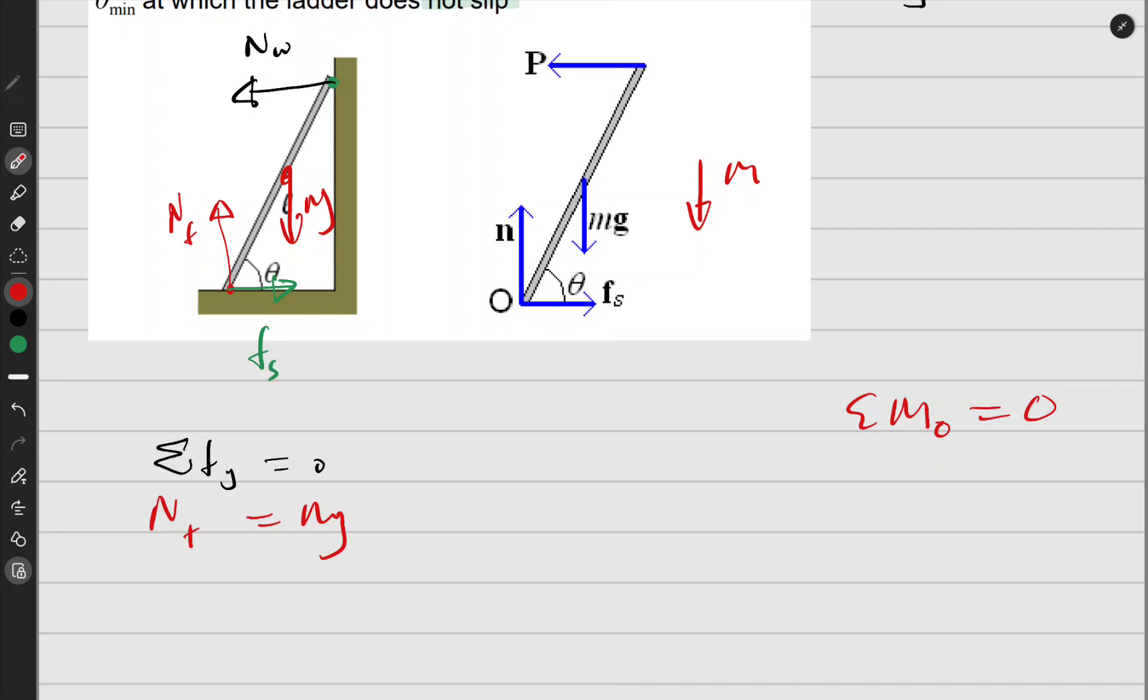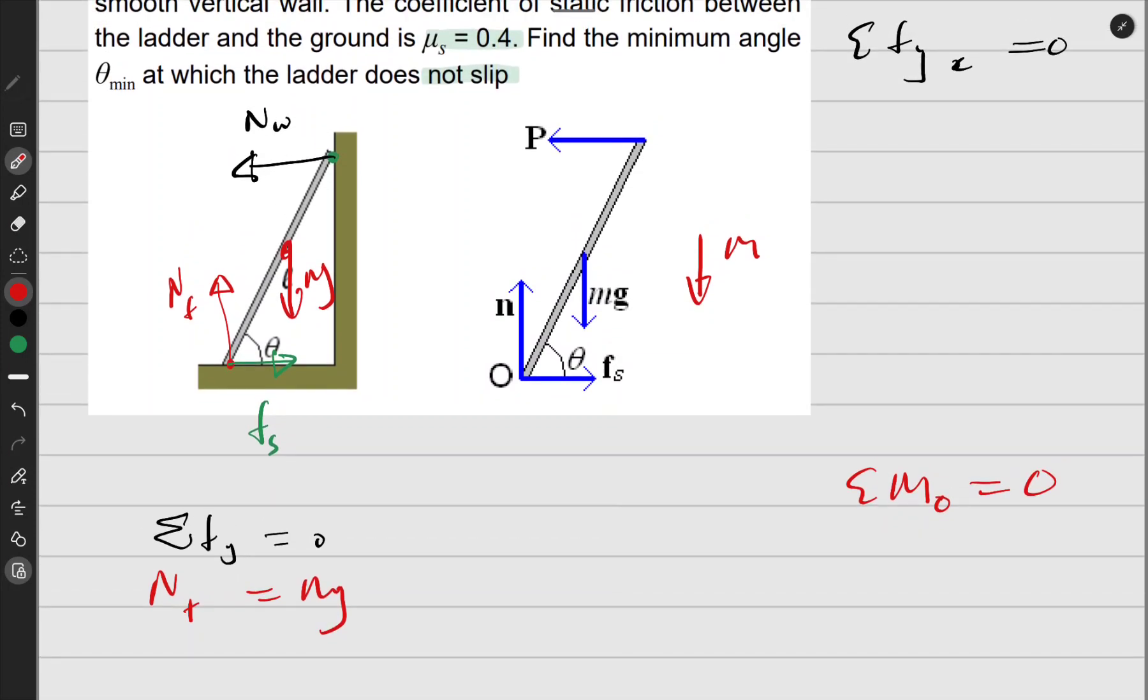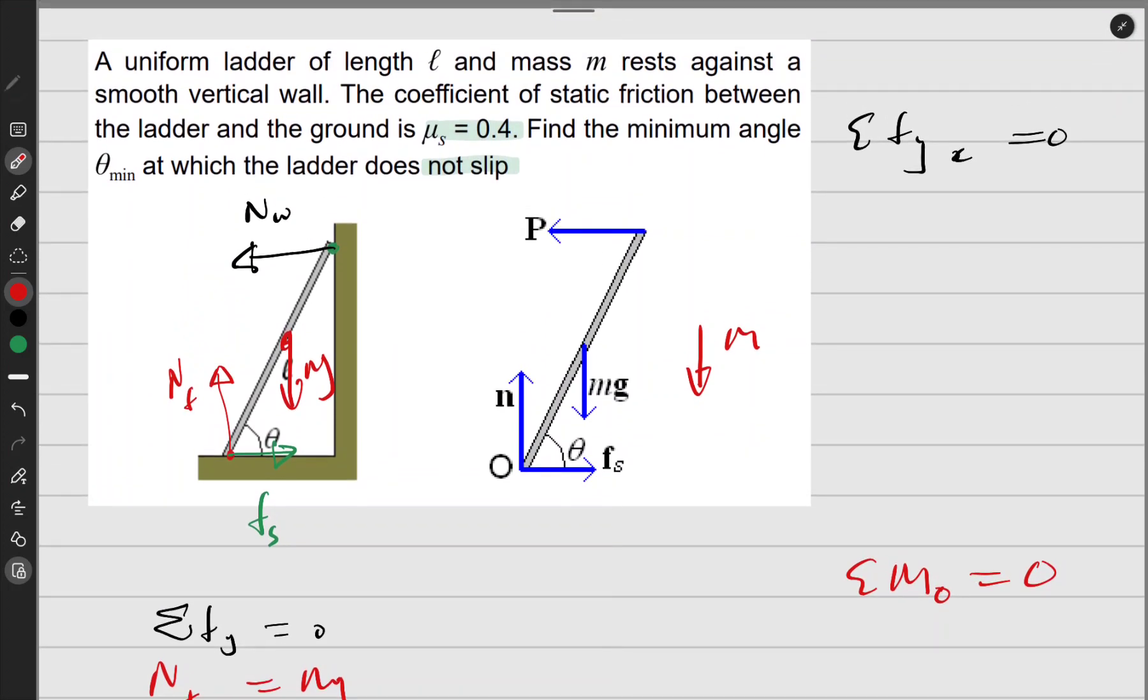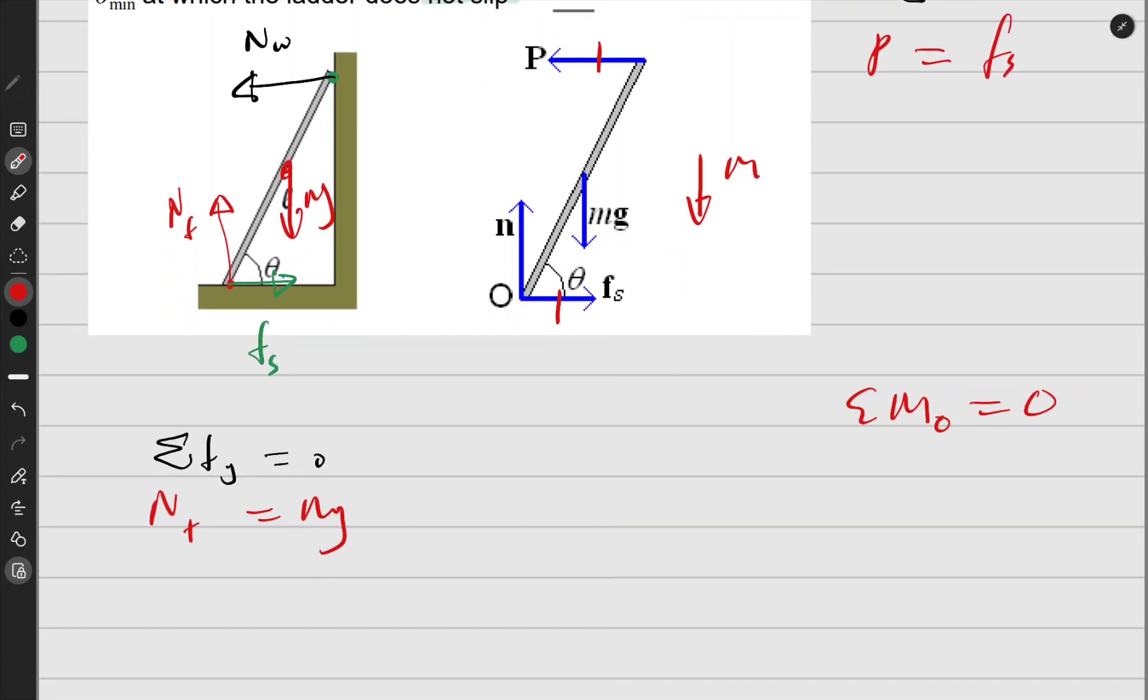Okay, and let's come back here. Sum of forces along x, we have this normal from the wall they call P, and we also have static friction. So for this thing to be static again, this needs to be equal to this. So I can just say P is equal to force static.